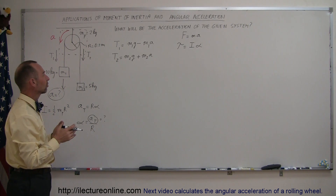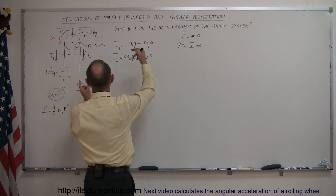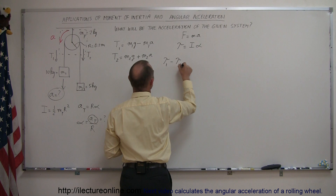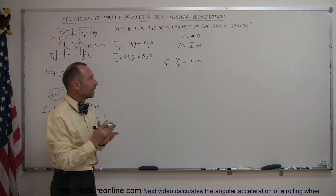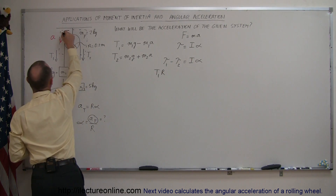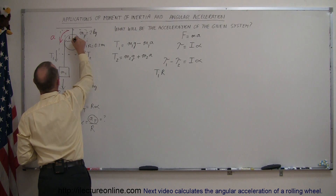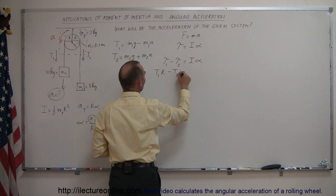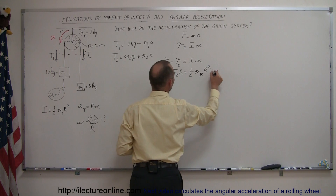So what is the net torque on the system? We have the larger tension T1 pulling one way and the smaller tension T2 pulling the other way. Assuming the direction of acceleration, we say: torque from mass one minus torque from mass two equals the moment of inertia times the angular acceleration. The torque is force times perpendicular distance — that is, the tension times the radius R of the pulley. So: T1·R − T2·R = I·alpha = ½·M_pulley·R²·alpha.